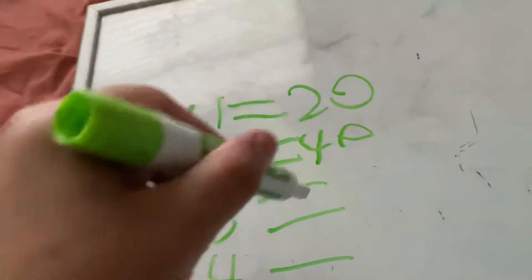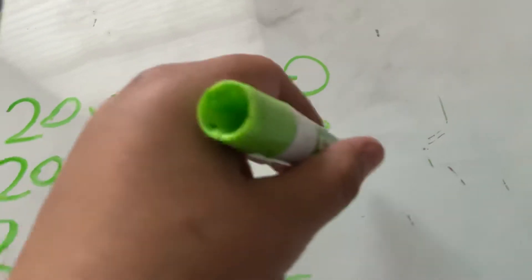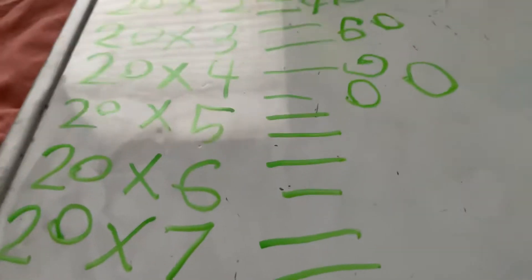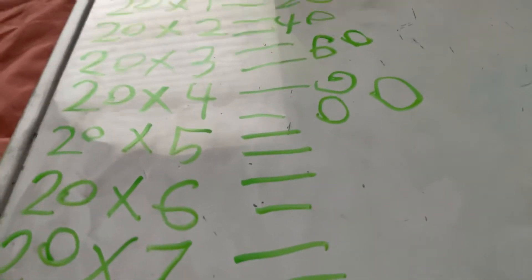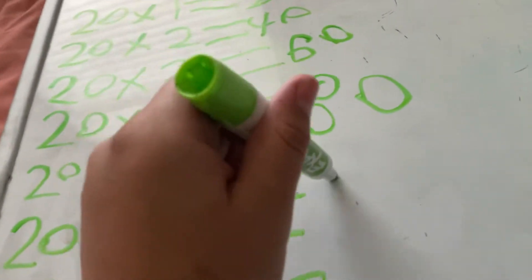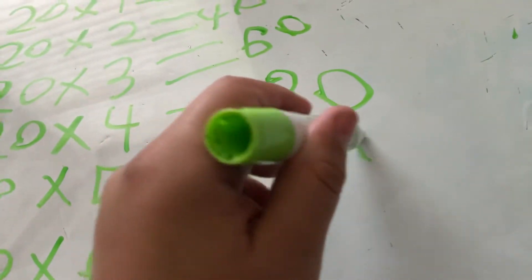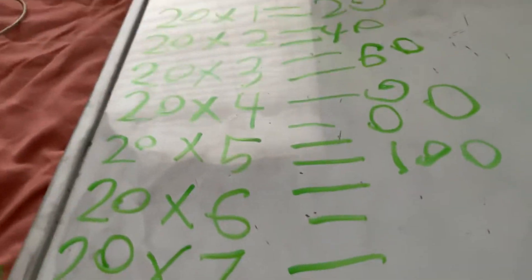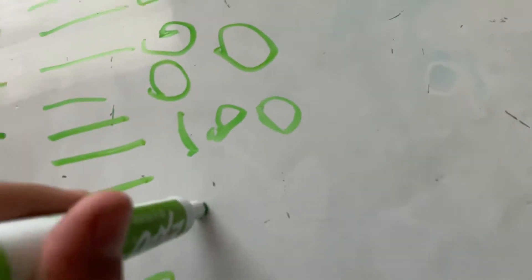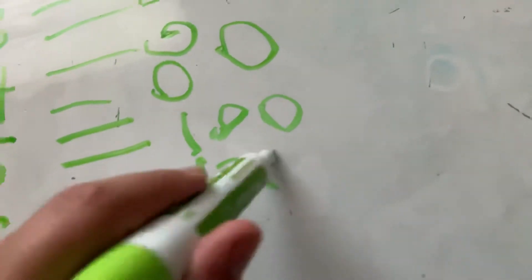20 times 3 is 60, 20 times 4 is 80, 20 times 5 is 100, and 20 times 6 is 120.